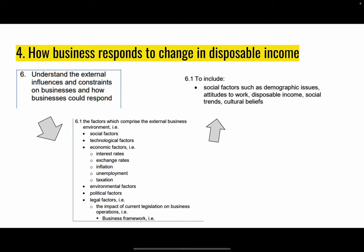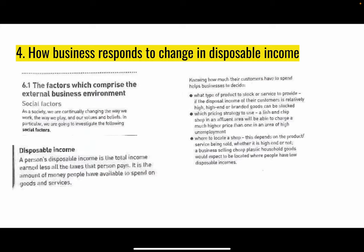Theme four is how businesses respond to changes in disposable income. This comes under learning outcome six — the external environment. Looking at social factors under 6.1, we have to include social factors such as demographic issues, attitudes to work, disposable income, social trends, and cultural beliefs. That is what you're expected to know from the specification. The textbook section explains what a social factor is and the details on disposable income — read through this to make sure you understand the knowledge behind what could come up in the questions.